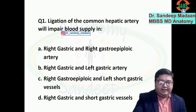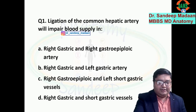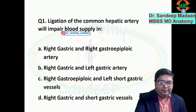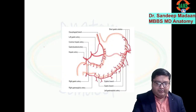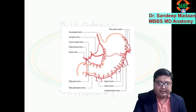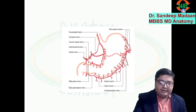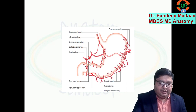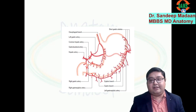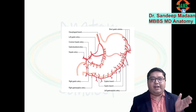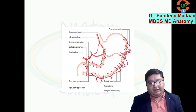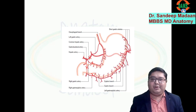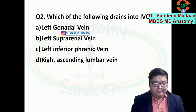The answer is right gastric and right gastroepiploic — choice A. If you ligate the common hepatic artery, the right gastric artery is involved, as well as the right gastroepiploic artery, because it also involves the gastroduodenal artery and the proper hepatic artery, which gives the right and left hepatic arteries. All this area of distribution will be affected.